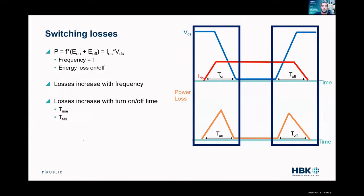Next up is switching losses. This was a couple slides ago when I mentioned that as we turn that switch on, we have a non-zero voltage and a non-zero current that are overlapping, and we get this kind of inrush of power during turn on and turn off.